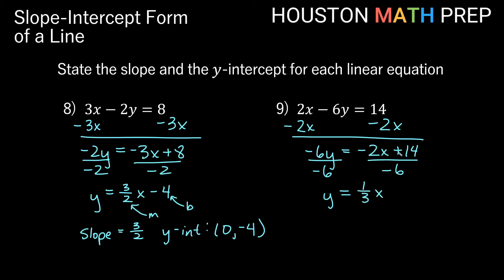Positive divided by a negative makes it minus. And 14 over 6, if we reduce by dividing both by 2, gives us 7 over 3. So our m in this case is 1 third, and our b is negative 7 thirds.